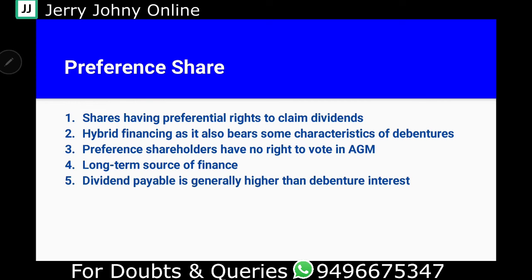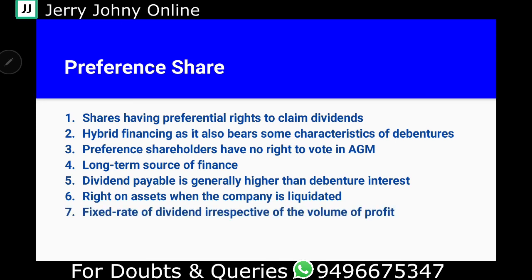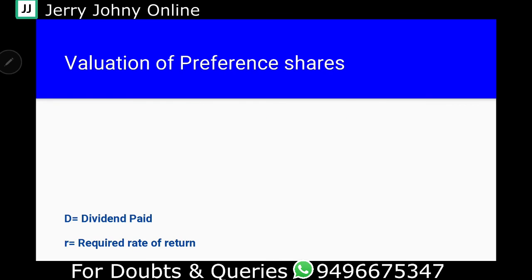If it is not higher than the debenture interest rate, then there is a Right on Asset when the company is liquidated — when the company is going to wind up and get rid of all debt. Then, Fixed Rate of Dividends irrespective of the volume of profit — profit is not higher than the fixed level of dividends. Also, dividends are not tax deductible. These are the major features of your Preference Share.